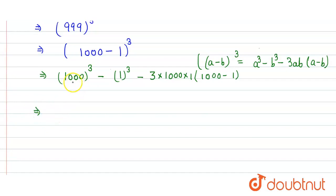So here it will be, here there is 1000 cube, so here we get 1,000,000,000 and then minus 1 cube is simply 1, minus here it is 3 times 1000 will be 3000, and then here it will be 999.